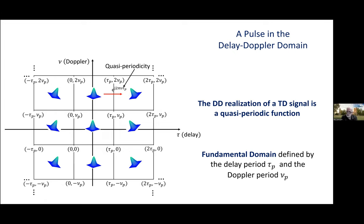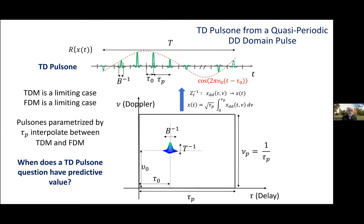What does a doubly spread channel do to these pulses? It moves them about in the same way that a pure delay channel acts on time domain pulses. For this to be the case, the delay and Doppler spread of the channel needs to be captured inside the fundamental periods. So, we're dealing with underspread channels here.